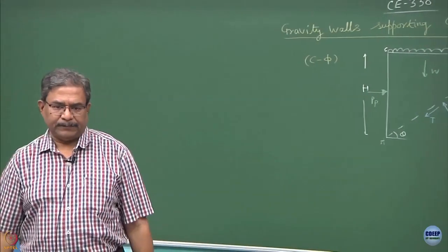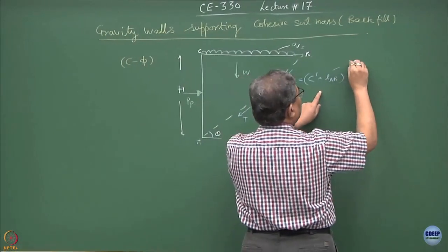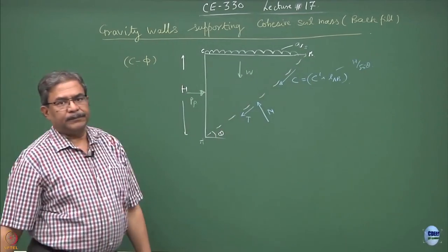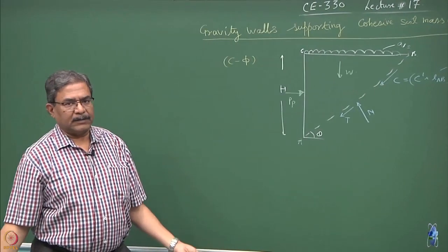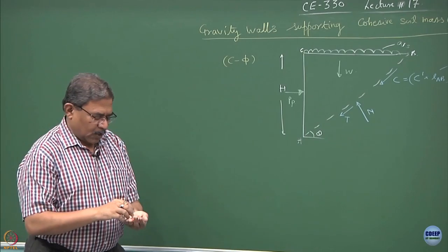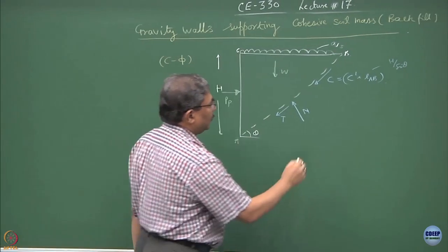Is this okay? So, this is the only difference which we have made and l AB is known, this is h upon sin of theta. Now, we can solve this problem by using the simple trial wedge analysis. Try to work out the magnitude of pp, what this should be equal to?